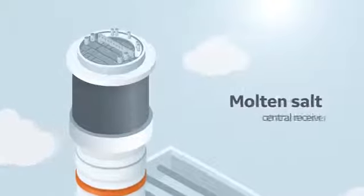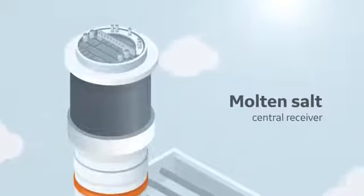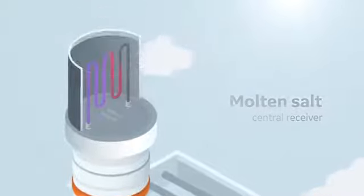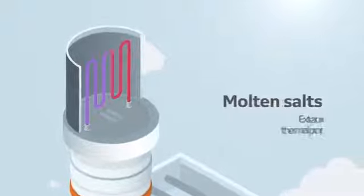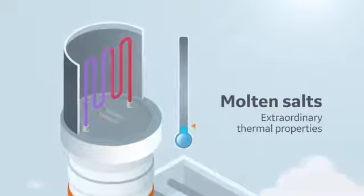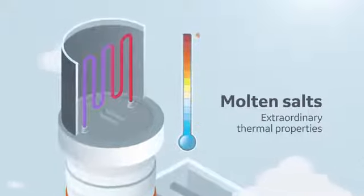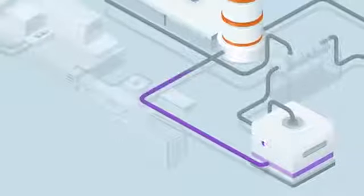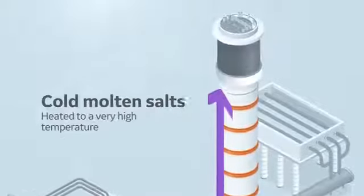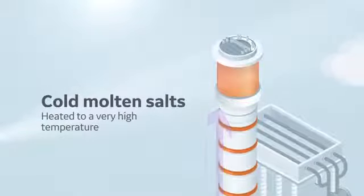GE has taken all that to the next level by offering technology with a molten salt central receiver. These molten salts are a fluid containing chemical components whose thermal properties are of particular interest. The cold molten salts stored in a tank at the base of the tower are pumped up to the top, where they're heated to a very high temperature.